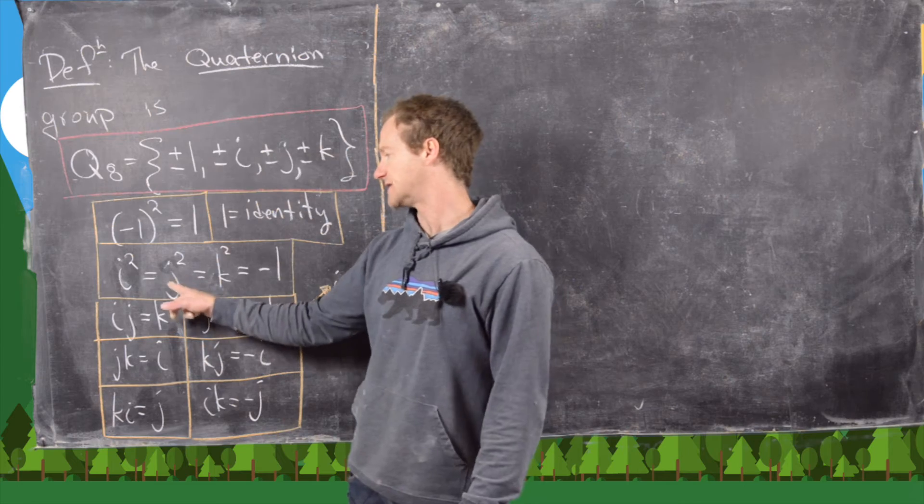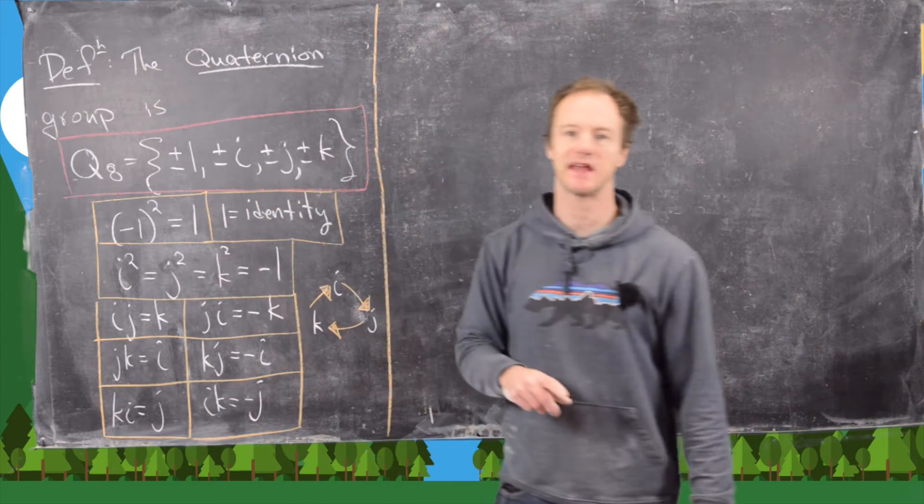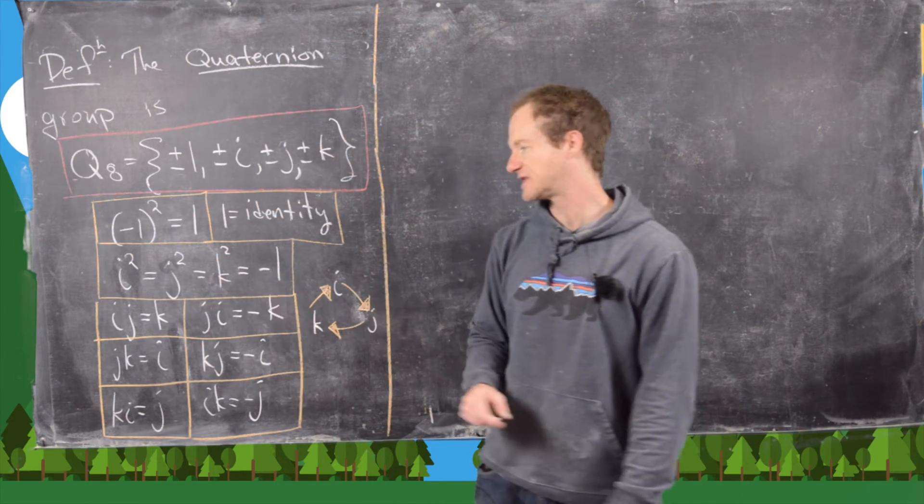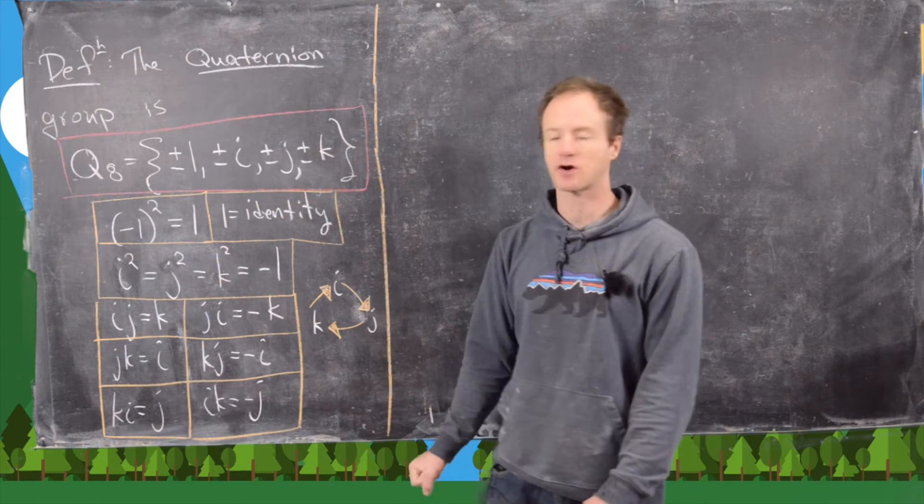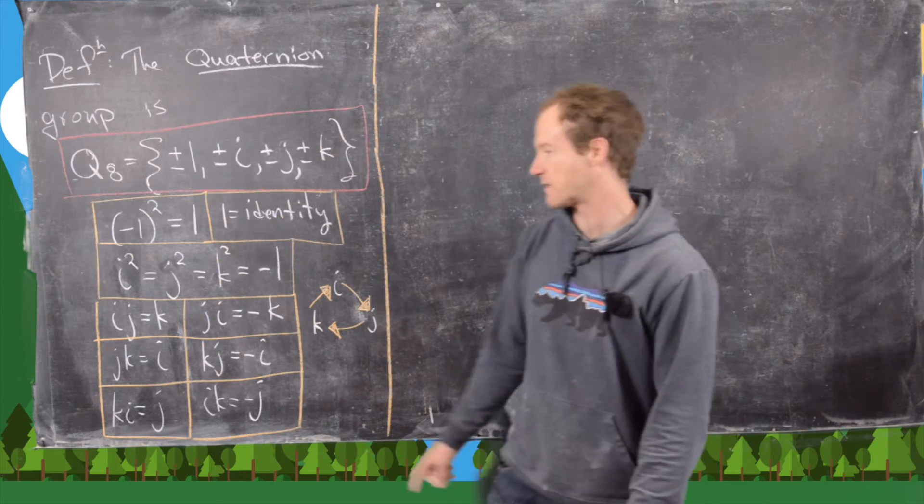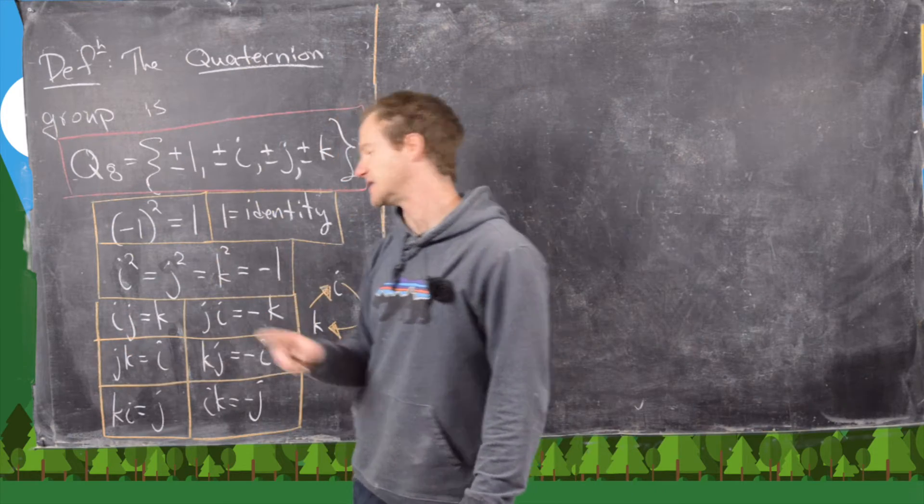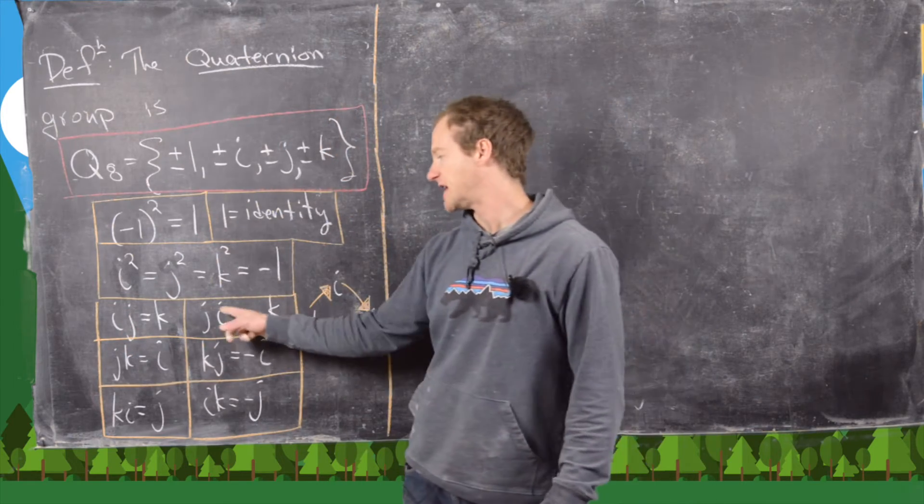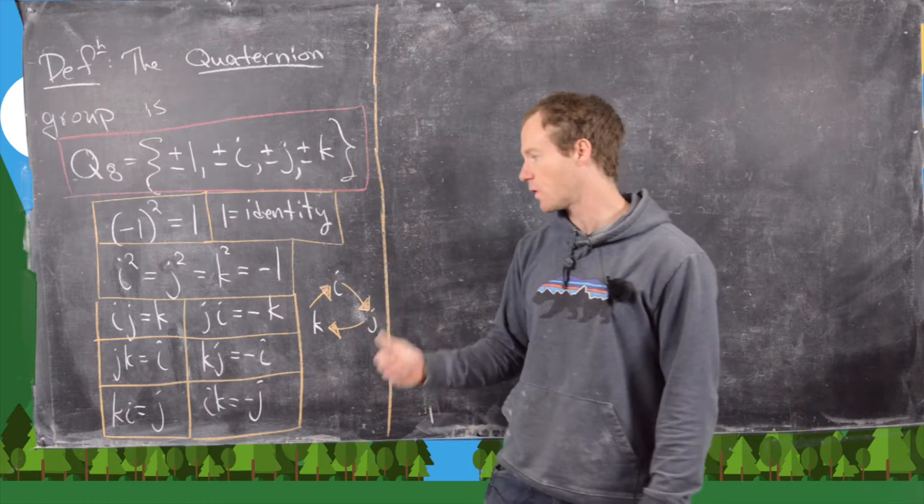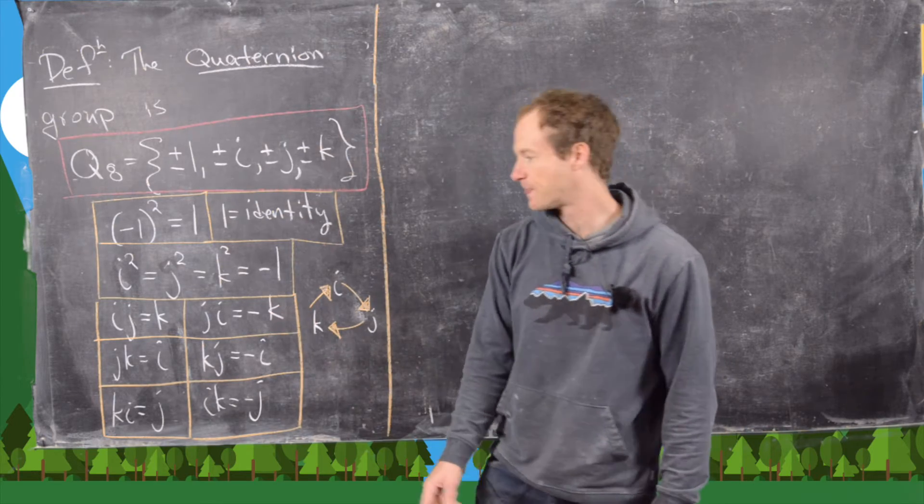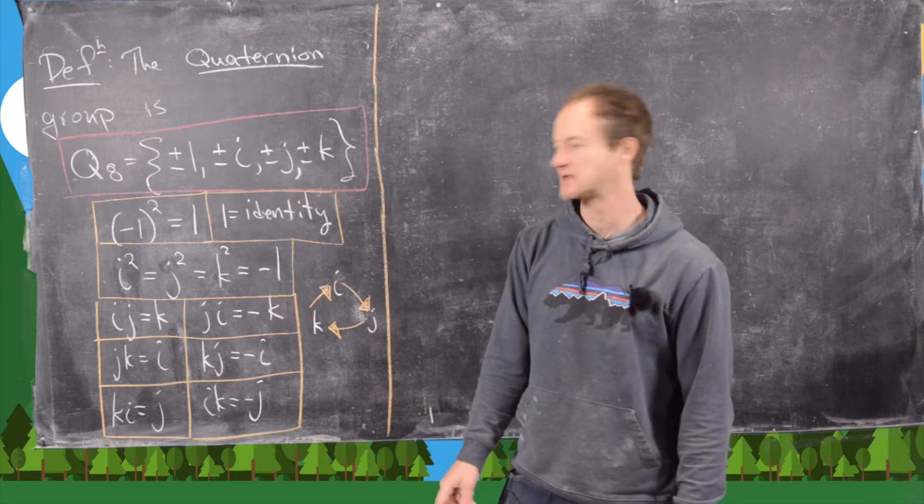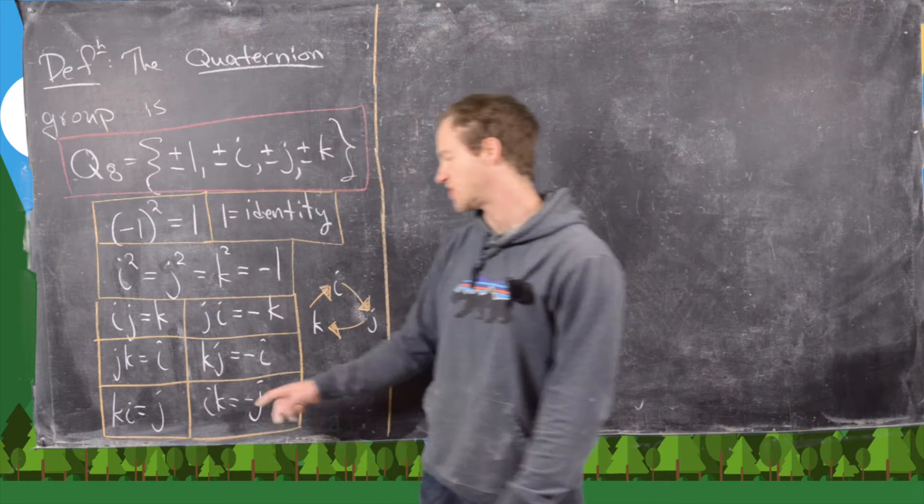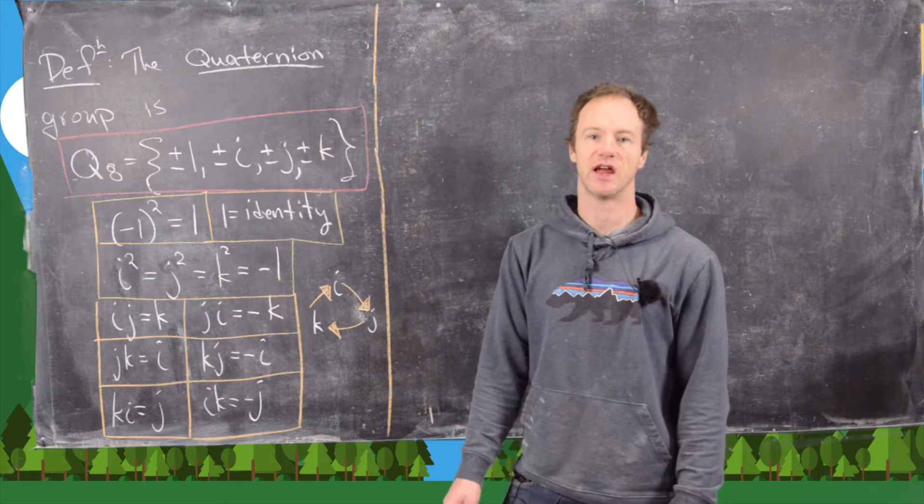And then we have i squared is the same thing as j squared is the same thing as k squared, which is the same thing as negative 1. And then finally, these are our rules for multiplying the other elements. So i times j is equal to k. In other words, if you reverse the order, you get a minus sign. And then j times k is i, k times j is minus i, k times i is j, and i times k is minus j.